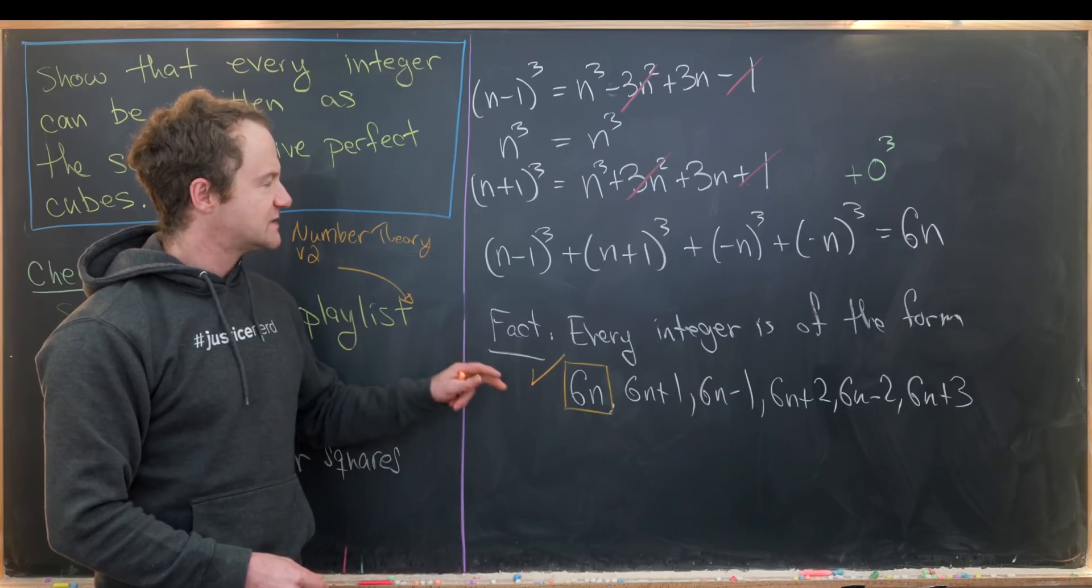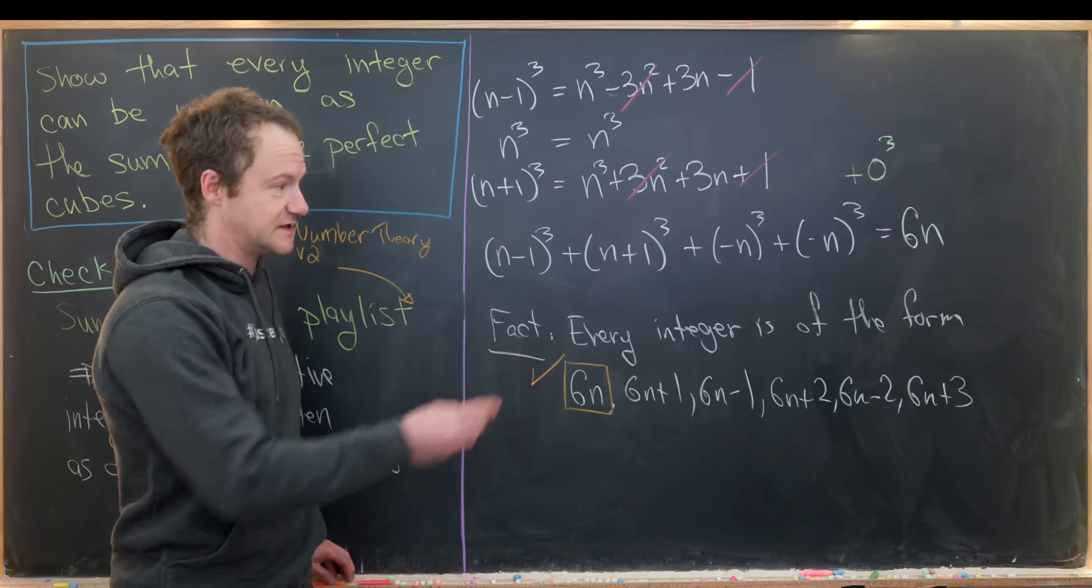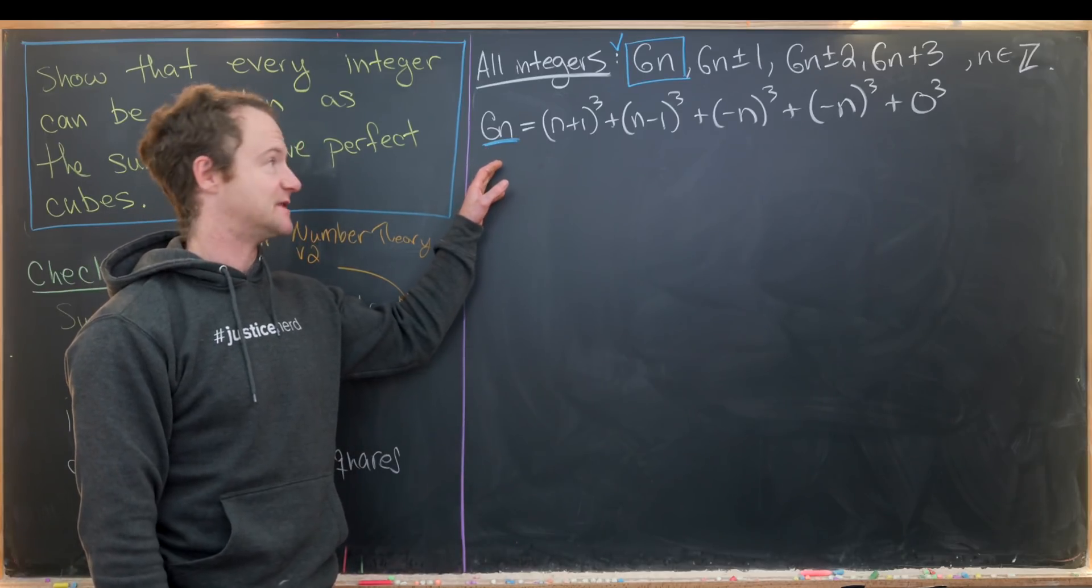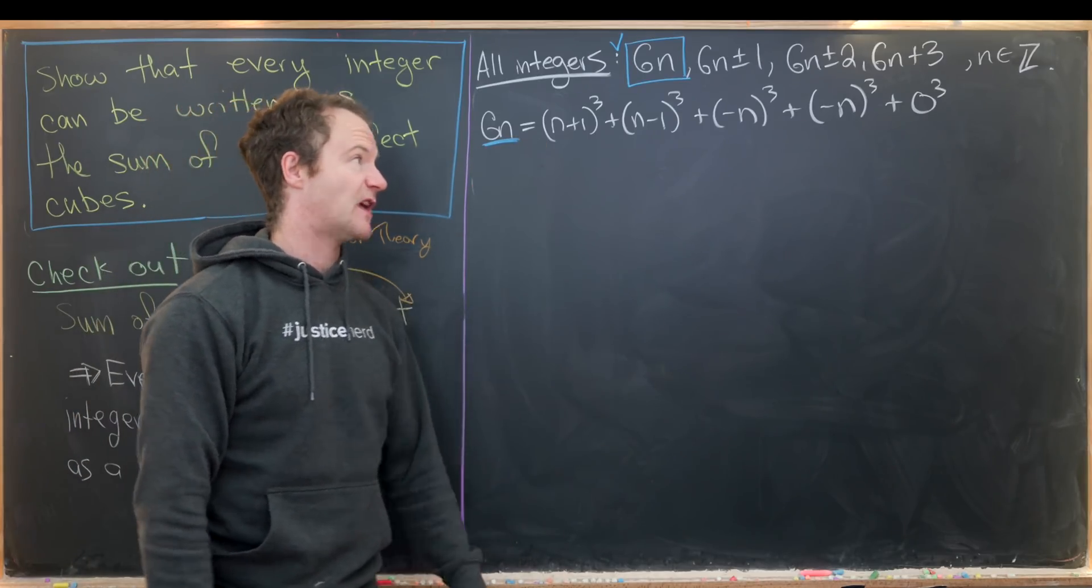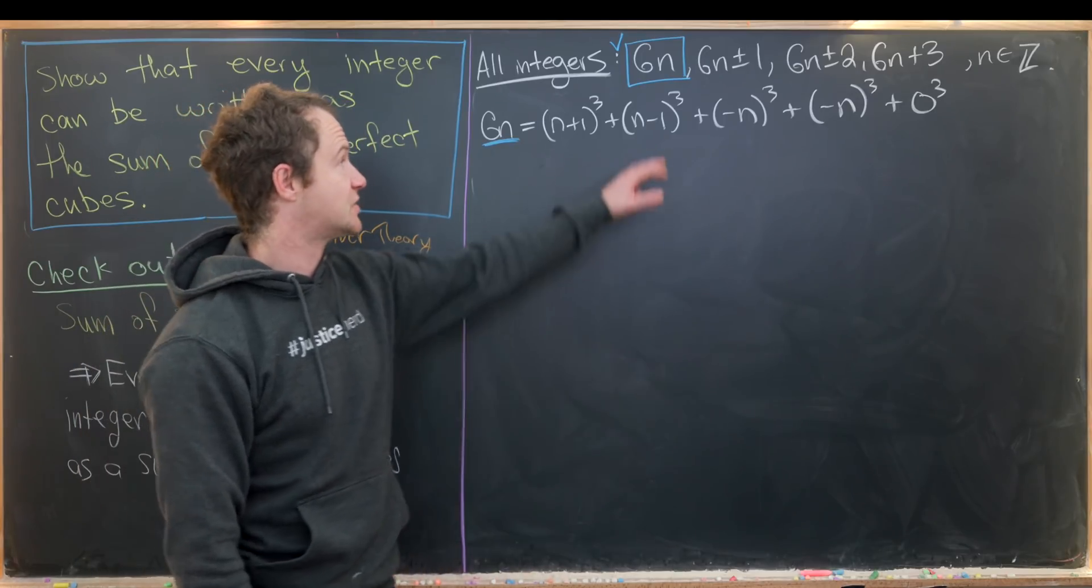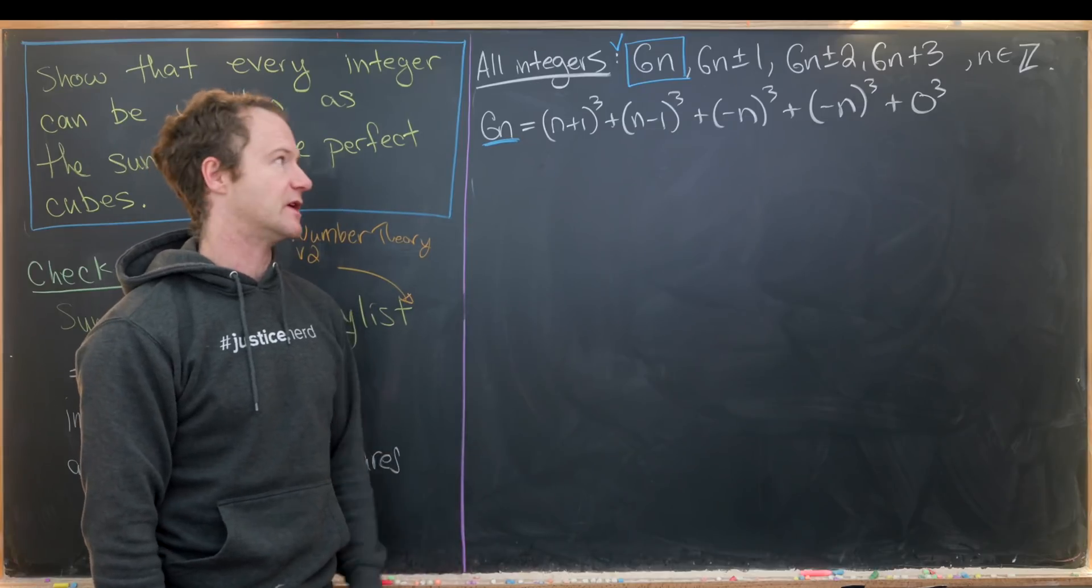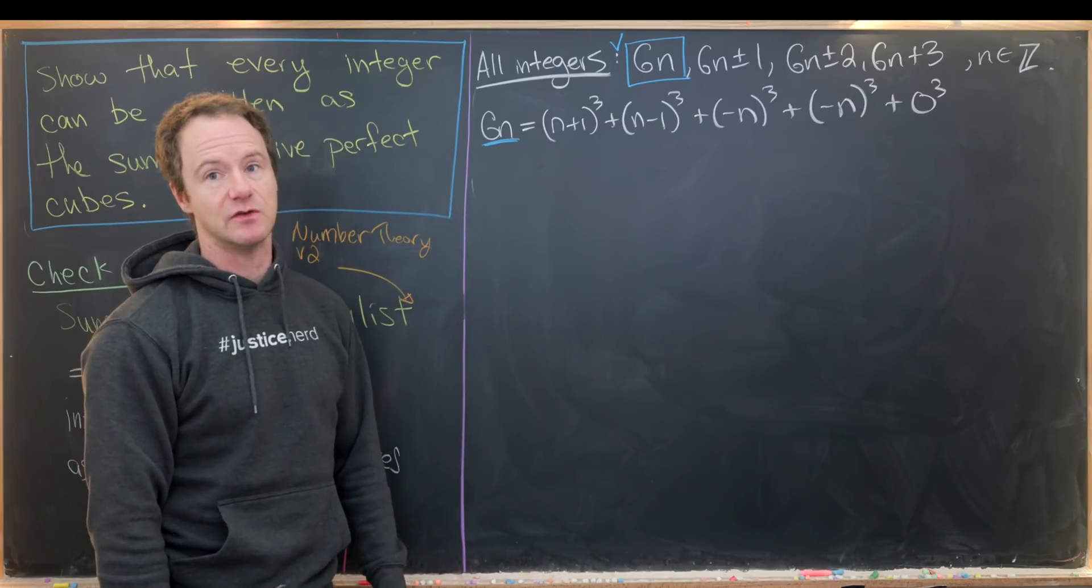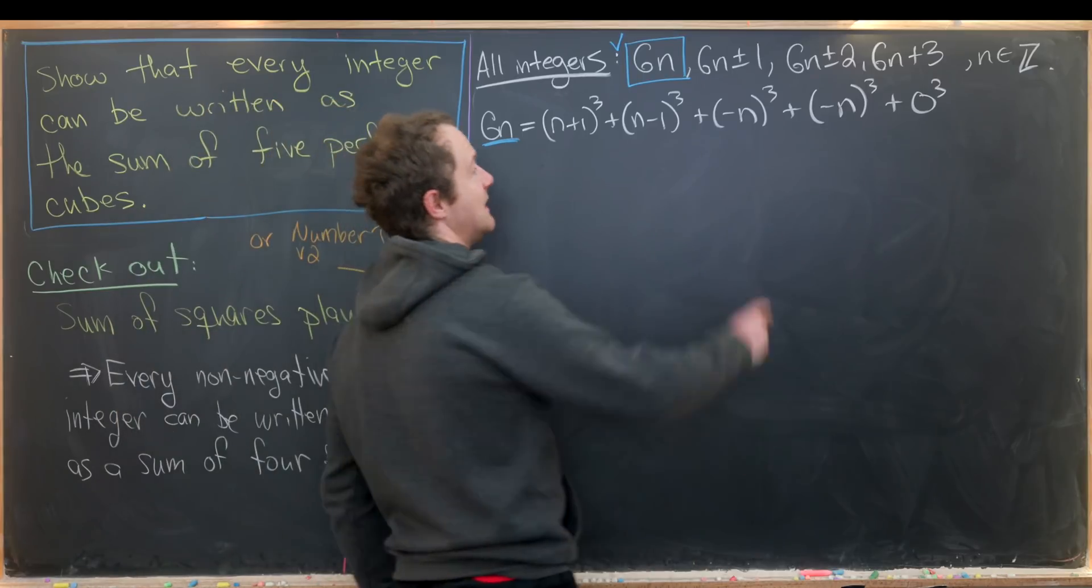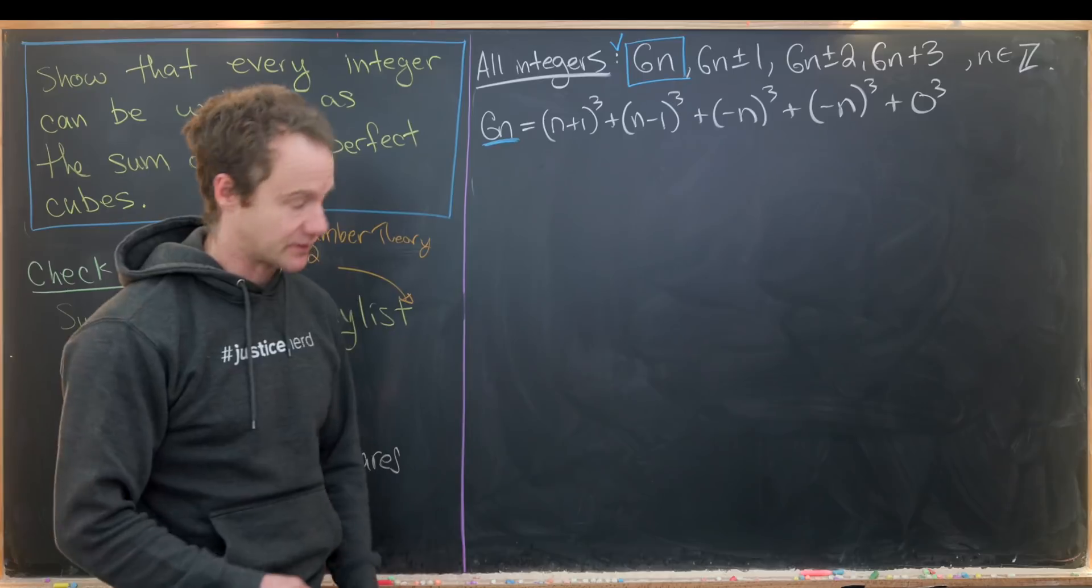Let's summarize what we have at the top and then work on these other forms. On the last board we expanded 6n as the sum of five perfect cubes, if we include 0³. That means everything of the form 6n can most definitely be written as the sum of five cubes. Now we need to look at the other forms of integers: 6n±1, 6n±2, and 6n+3.